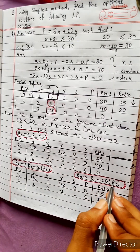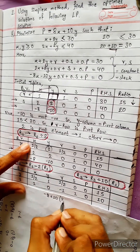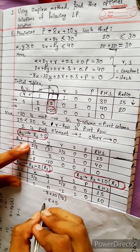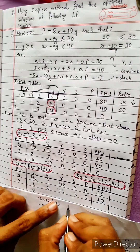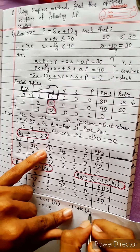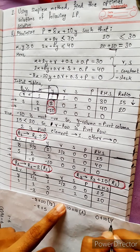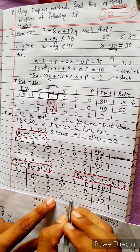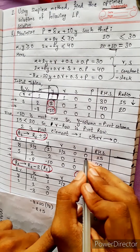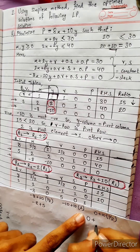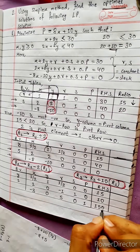For R3, operation is R3 plus 10 times R1. minus 8 plus 10 times 1/2 gives minus 8 plus 5. For y: minus 10 plus 10 times 1 equals 0. For r: 0 plus 10 times 1/2 equals 5. For s: 0; p: 1. RHS: 0 plus 10 times 15 equals 150.